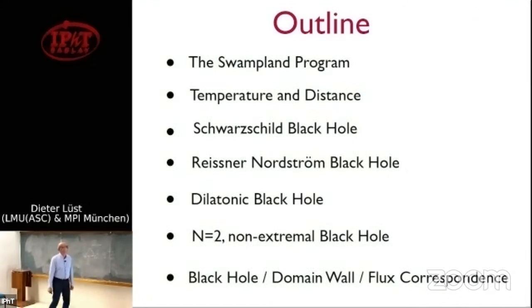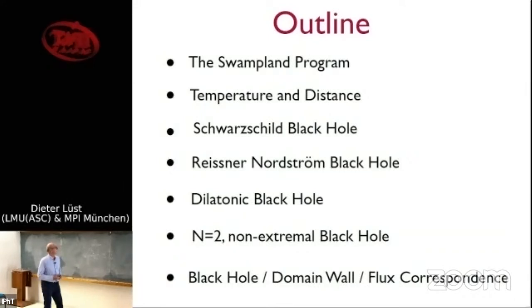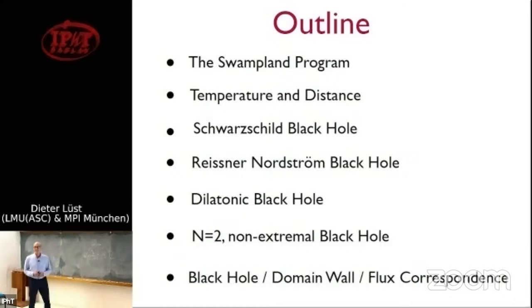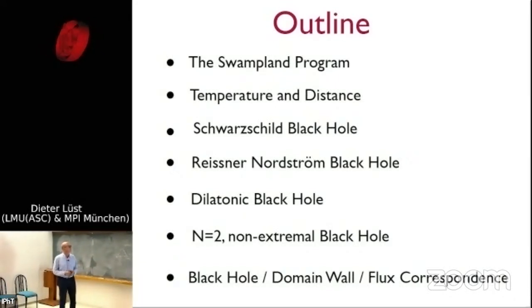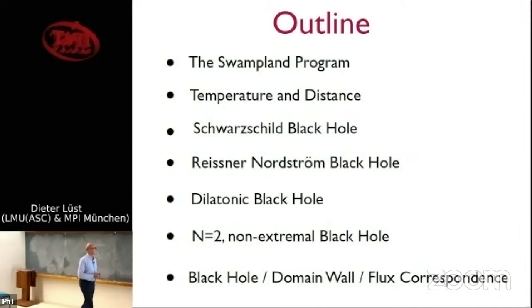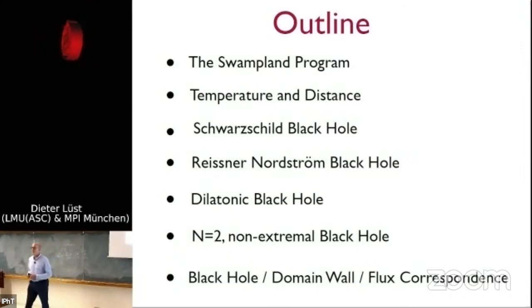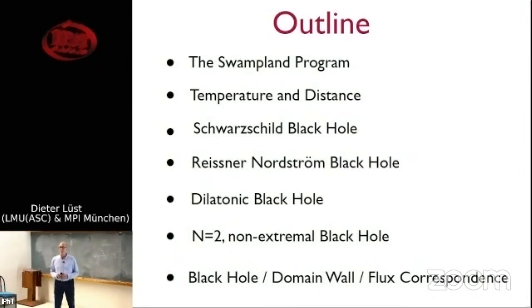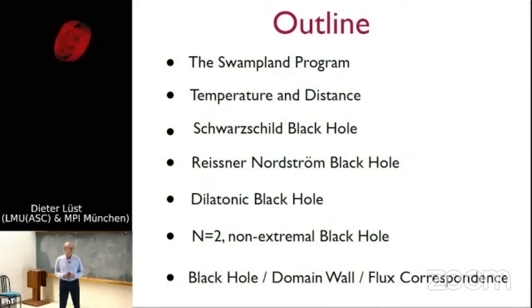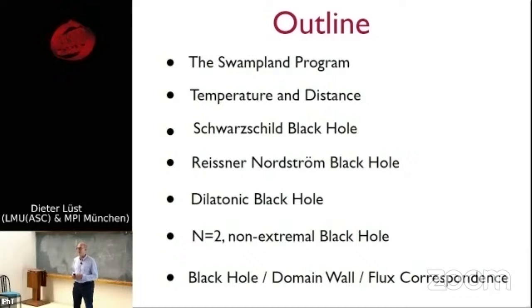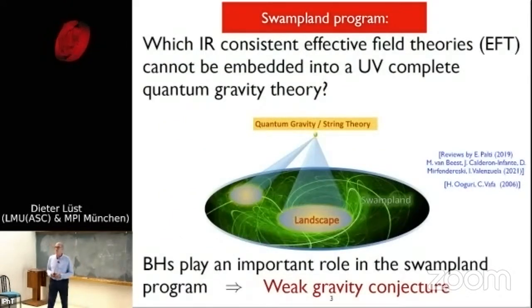Here is the outline of my talk. I will first introduce the swampland program in a nutshell for those not so familiar with it. Then I will comment on temperature and distance, since temperature plays a role in my talk. I will go through various types of black holes: the Schwarzschild black hole, Reissner-Nordström black hole, dilatonic black hole, and N=2 non-extremal black holes. Finally, I will discuss the correspondence between certain black hole solutions, domain walls, and flux compactifications, which are important for AdS vacua in string theory.